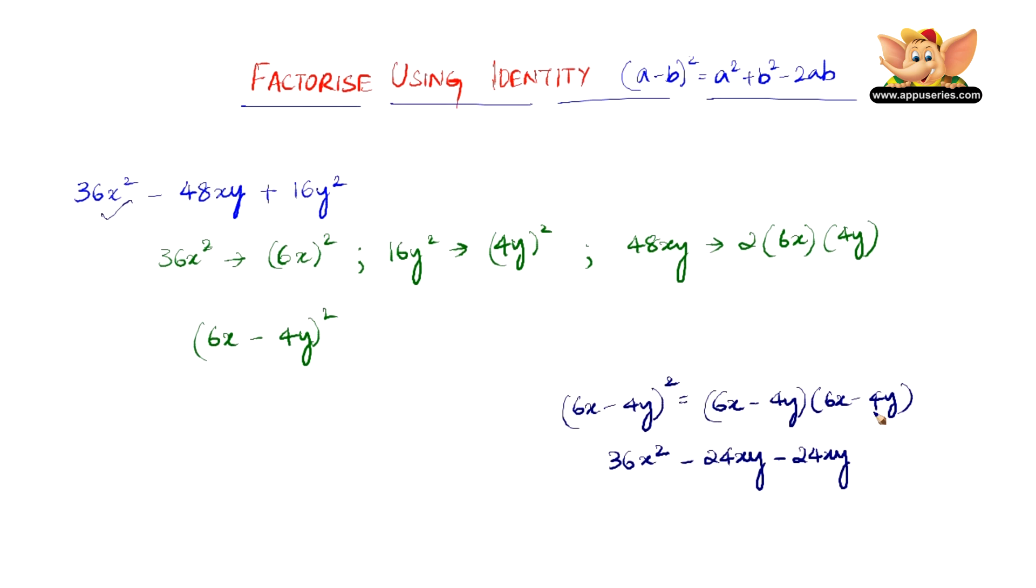So now minus 4y into minus 4y is plus 16y square. Seems like we've got 16y square right and it also is minus 24xy minus 24xy is minus 48xy plus 16y square which is perfectly matching with the original algebraic expression.